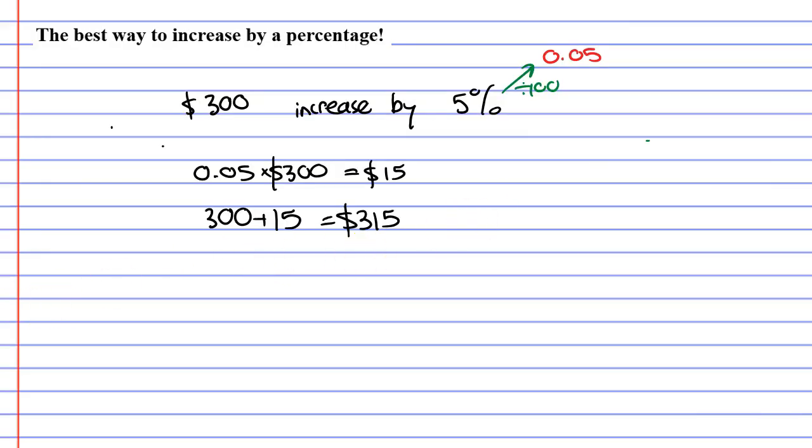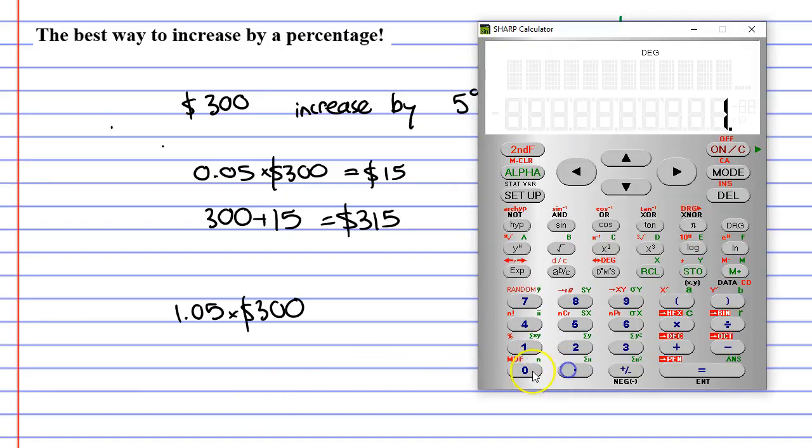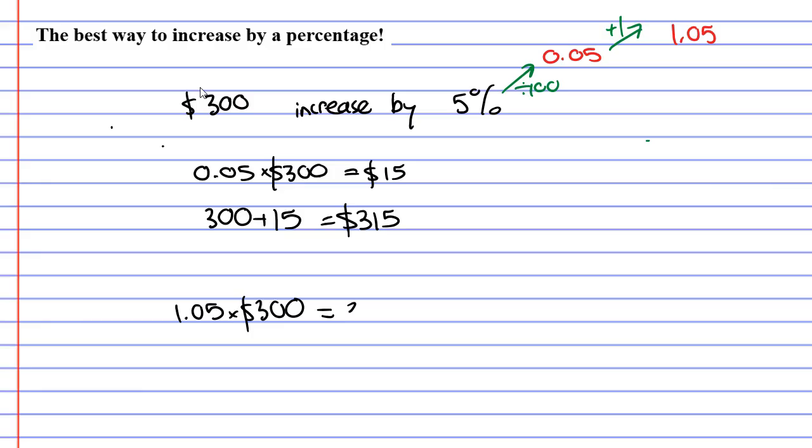So how are we going to do that? Some of you might remember many videos ago where I mentioned you could add 1 to your decimal. This gives us 1.05. What can we do with that? Well, what's 1.05 multiplied by our value of $300? 1.05 times 300 equals $315. And what you'll notice is we've done the exact same calculation as we did here, but we did it in only one step.